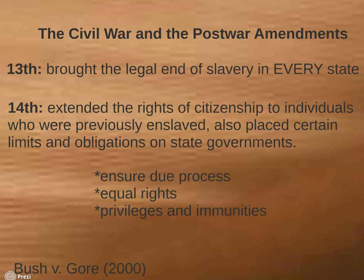Since the 14th Amendment's ratification, Congresses and Presidents have approved national laws that direct the states to ensure due process and equal protection. This legislation includes, for example, laws mandating that all government buildings — including state and local edifices — provide access to all persons, including individuals with physical disabilities. In addition, the Supreme Court has used the 14th Amendment to justify extending the Bill of Rights limits on national government to state and local governments under incorporation.